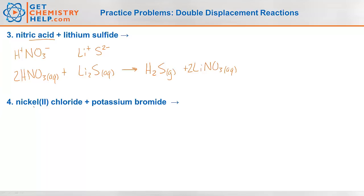How about number four? Nickel(II) chloride — nickel(II) means nickel with a 2⁺ charge. Chloride is Cl⁻, so we'd have NiCl₂. That's soluble because chlorides are generally soluble unless with silver, mercury(I), or lead(II) — and nickel(II) isn't any of those. Potassium bromide — potassium is group 1 so 1⁺, bromide is 1⁻, giving KBr. All potassiums are soluble, so aqueous.